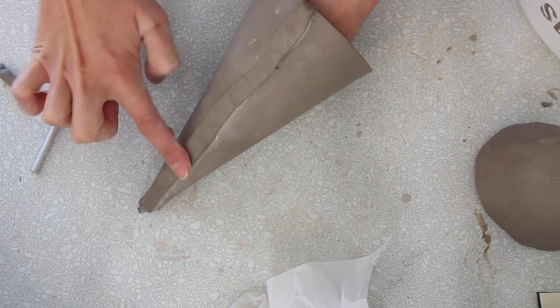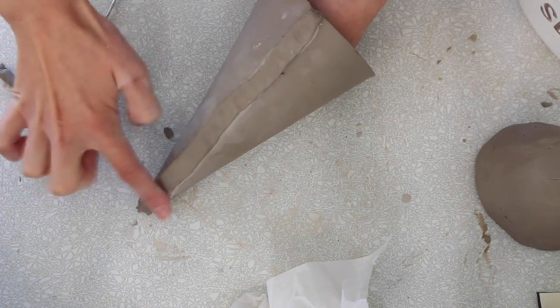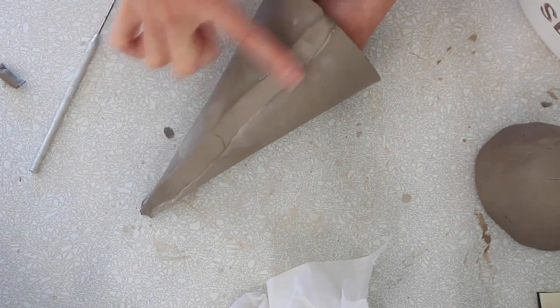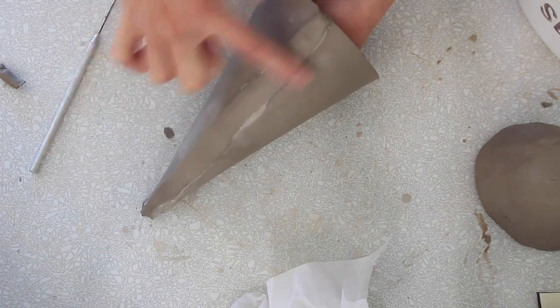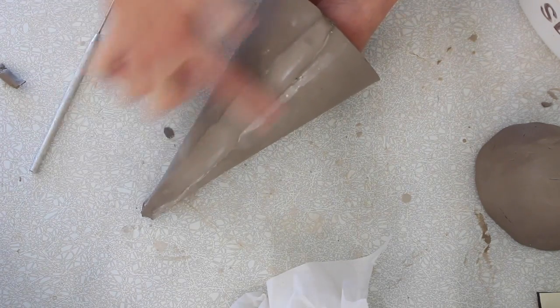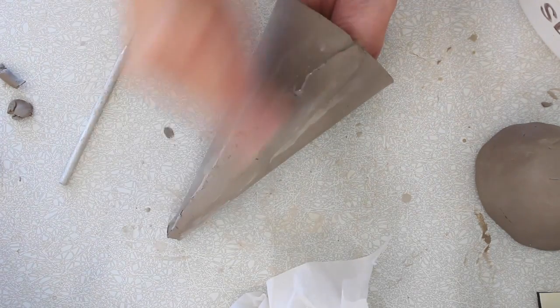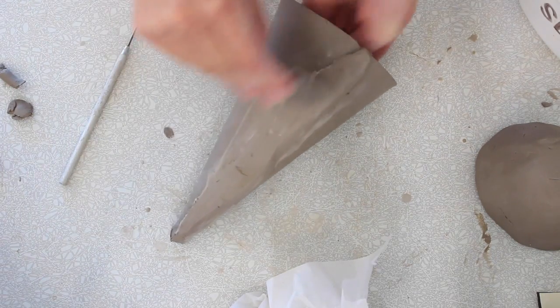Now think about it. If you had a really thick coil at this point, think about how much you'd have to smooth out. So after a while, I just like to run my finger across it. And you can take your metal rib and you can just start smoothing that down.